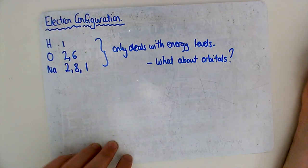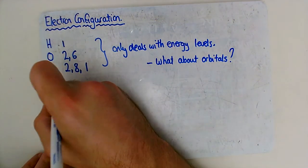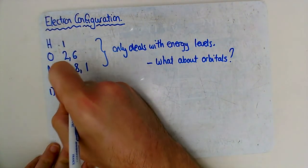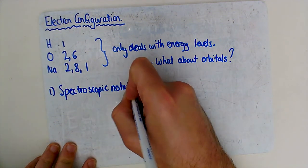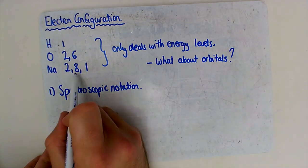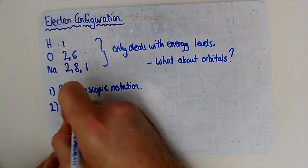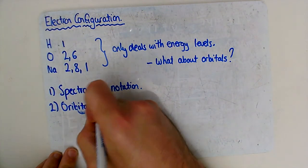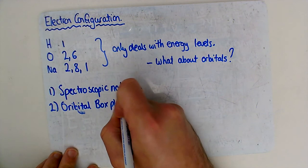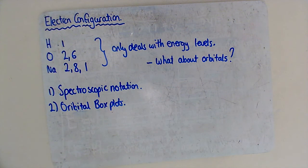We're going to look at two different ways of representing electron configuration. We're going to look at spectroscopic notation, which is a variation on the energy level approach. And then we'll look at orbital box plots, or box diagrams. The spectroscopic notation is like a list of numbers, while the orbital box diagram is more of a visual diagram.